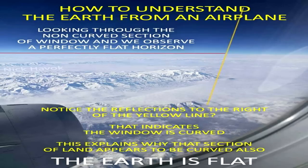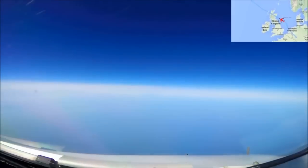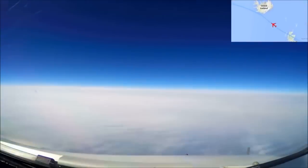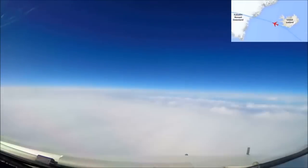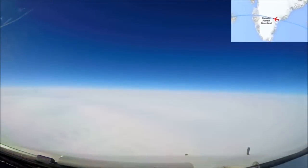Unfortunately, though, these windows also have the strange side effect of causing people to believe that the earth is a globe, because they mistake the curvature of the glass for that of the horizon. If these passengers would instead take a visit to the cockpit window and view the horizon from the pilot's vantage point, they would see clearly that the horizon remains completely flat as far as the eye can see.